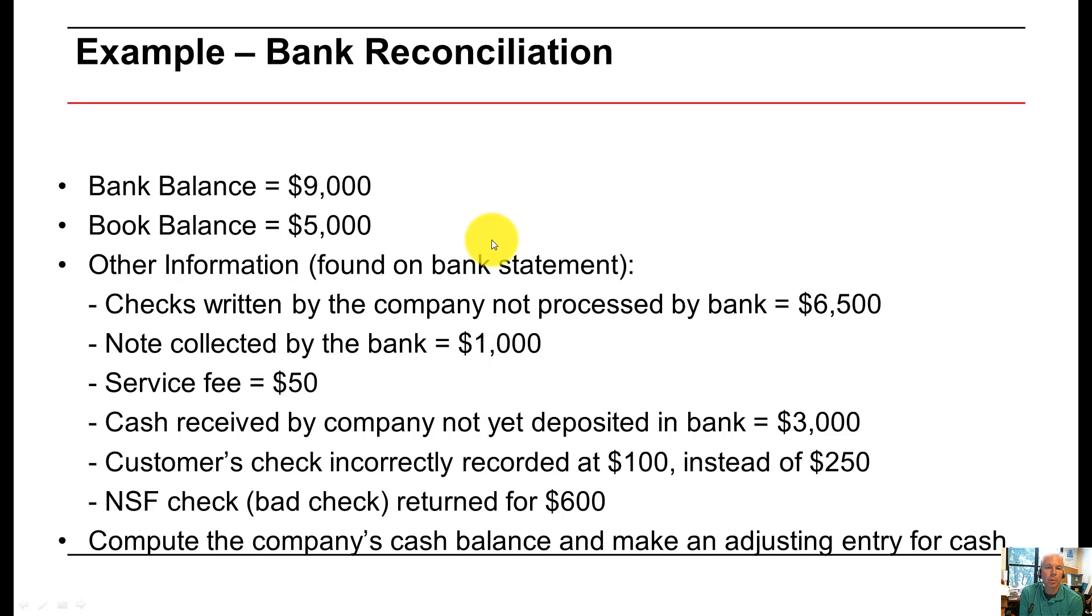Let's look at a quick example of a bank reconciliation. I want you to notice the bank balance says $9,000. This would come directly from the bank statement. However, the company's book balance says that the company has $5,000. Who's correct? Why are these different? However, in order to maintain good internal controls over cash, we must reconcile this difference.